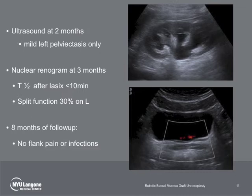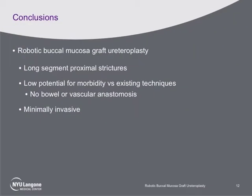She is currently 8 months out of surgery with no flank pain or infections. Robotic ureteroplasty with buccal mucosa graft interposition is a promising technique that avoids the morbidity of ileal ureteral transposition or autotransplantation. This technique may be applied to repair of long strictures of the proximal ureter. Further prospective study is ongoing. Buccal mucosa graft ureteroplasty is a feasible option for complex ureteral reconstruction and can be achieved in a minimally invasive fashion.